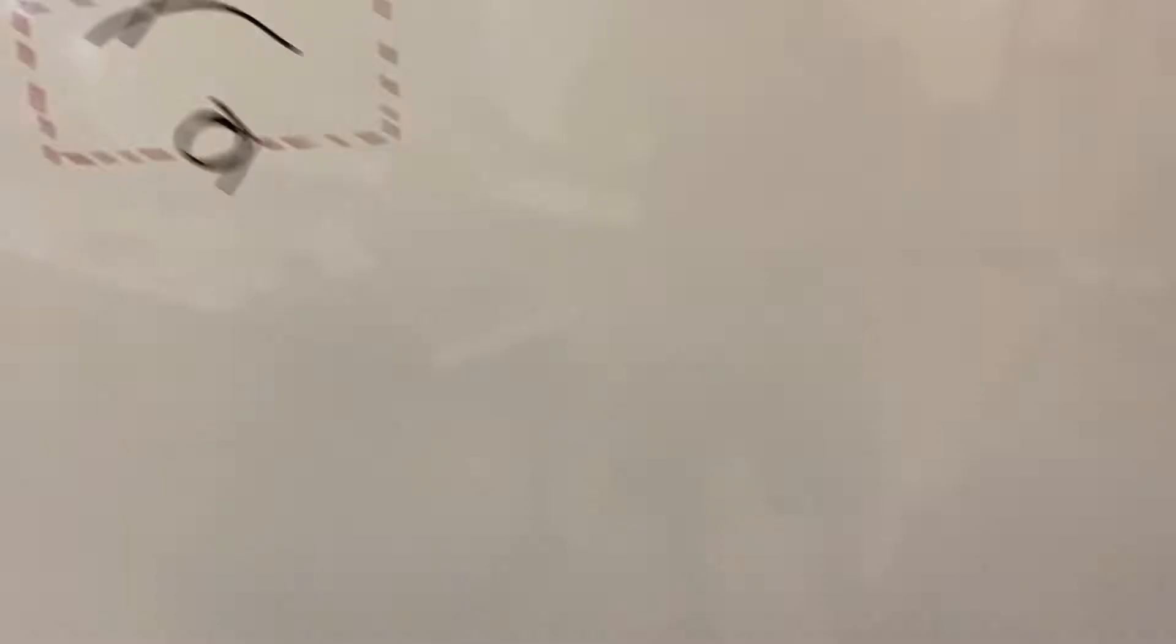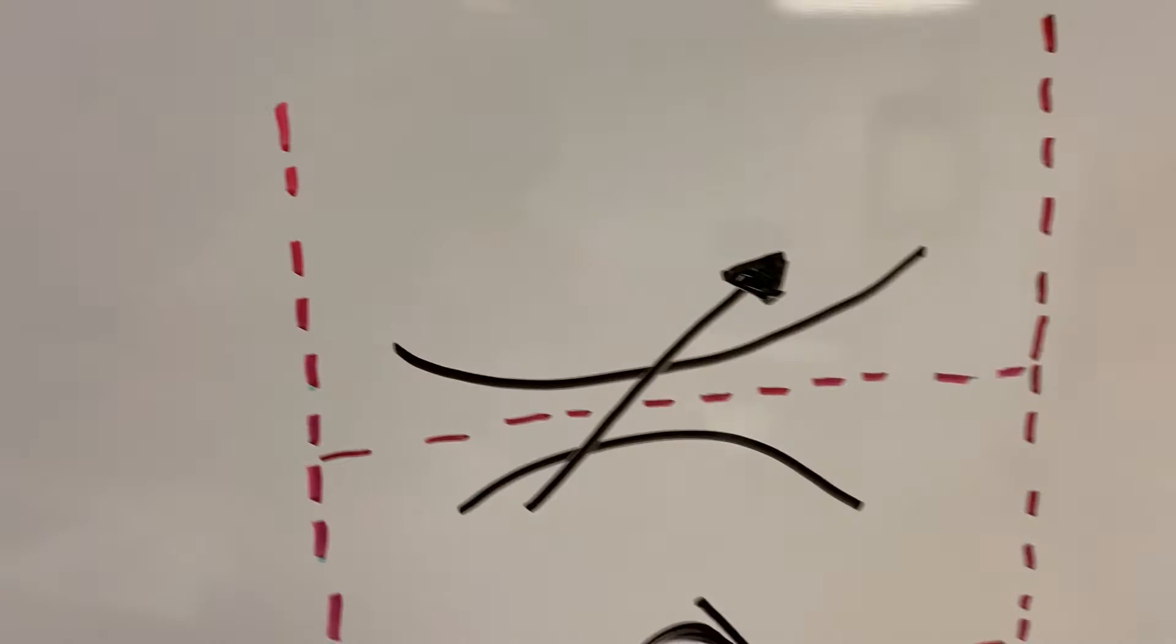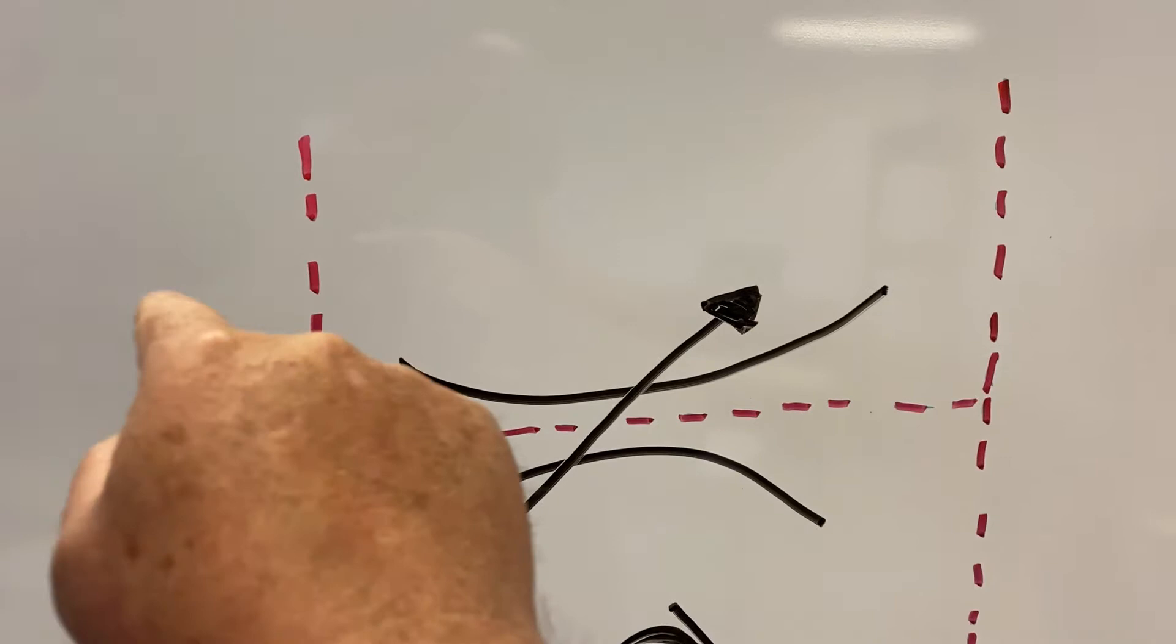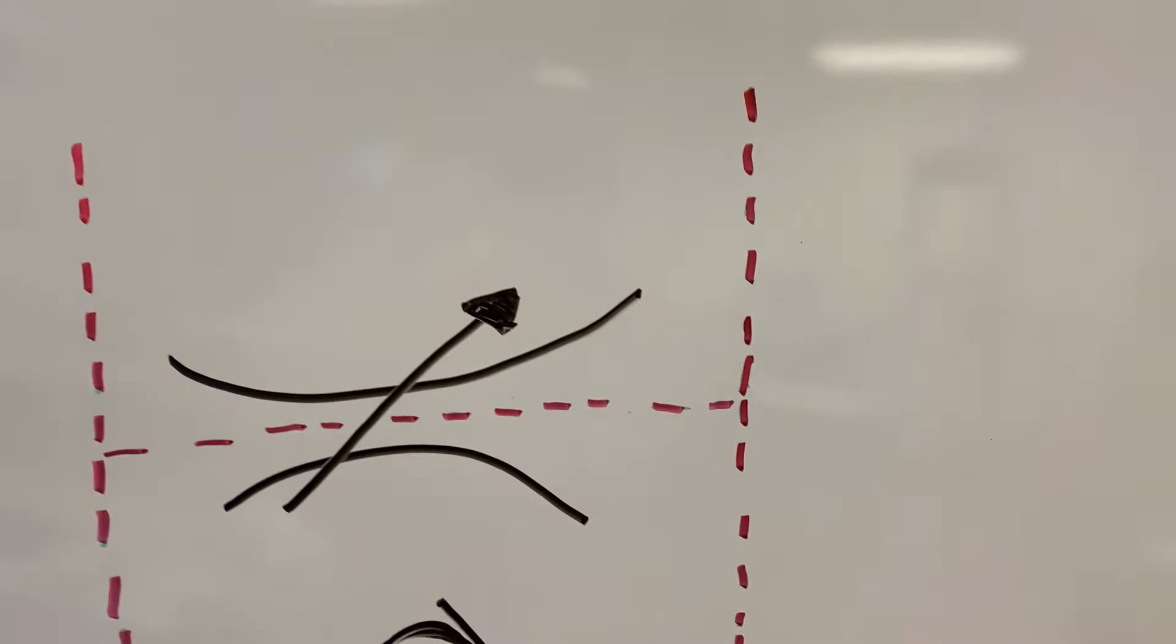And then what we've got here are three pressure gauges. Now, the important part is this: Pressure gauge A here is plumbed in before our flow control valve. Pressure gauge B is plumbed in after our flow control valve.